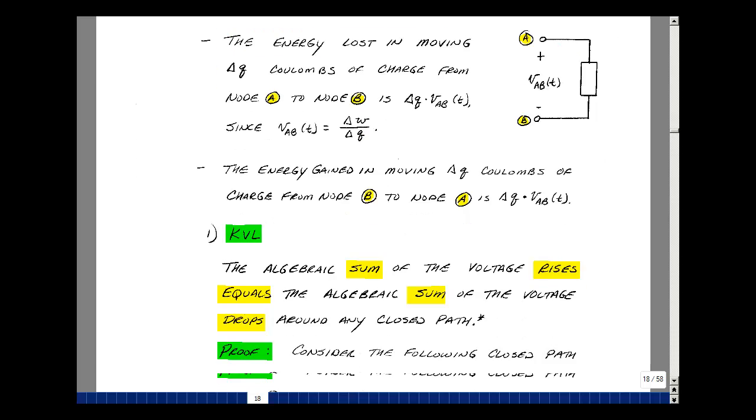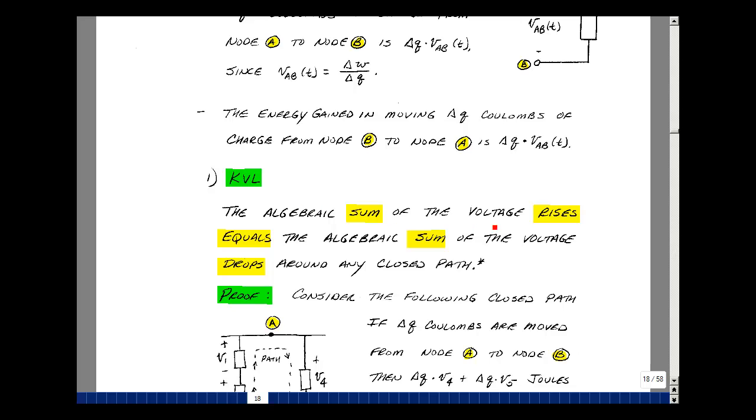Now let's state Kirchhoff's Voltage Law. The algebraic sum of the voltage rises equals the algebraic sum of the voltage drops around any loop or closed path. In Chapter 2 at the beginning, we talked about the definition of a loop. It's also called sometimes a closed path.